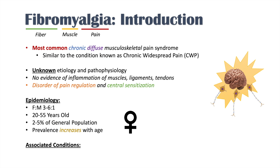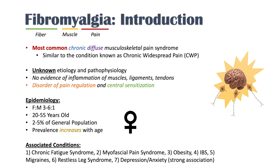There are conditions strongly associated with fibromyalgia. One of them is chronic fatigue syndrome, which is very strongly associated. Others include myofascial pain syndrome, obesity, irritable bowel syndrome, migraines, restless leg syndrome, depression, and anxiety — with depression and anxiety also having a very strong association with fibromyalgia.